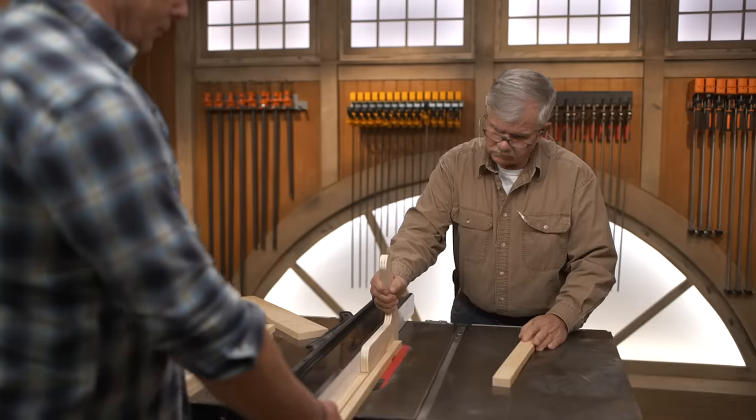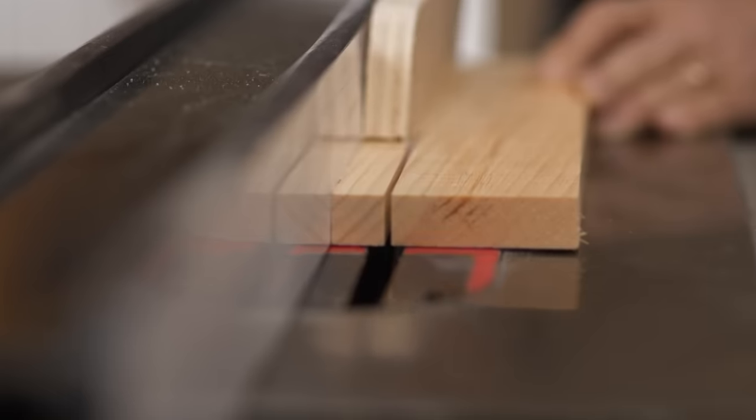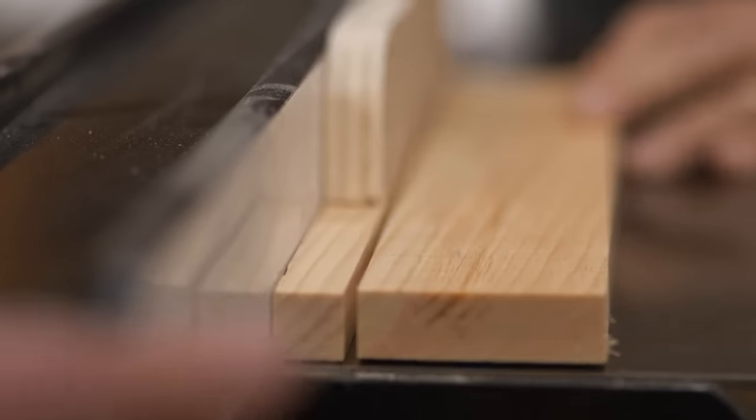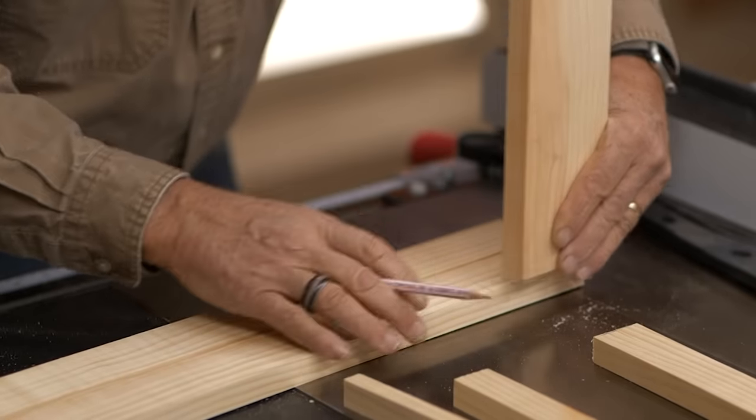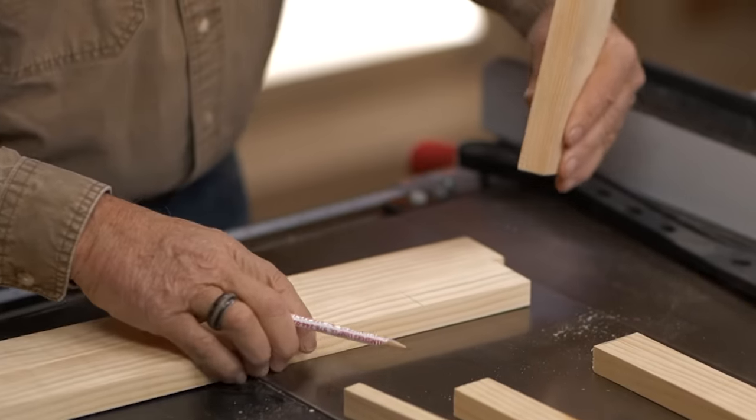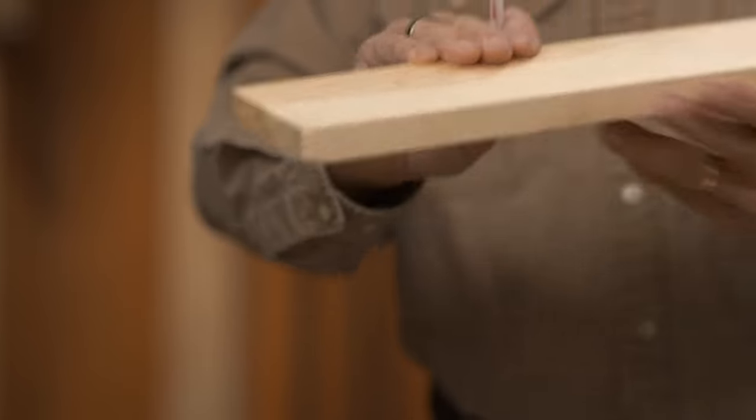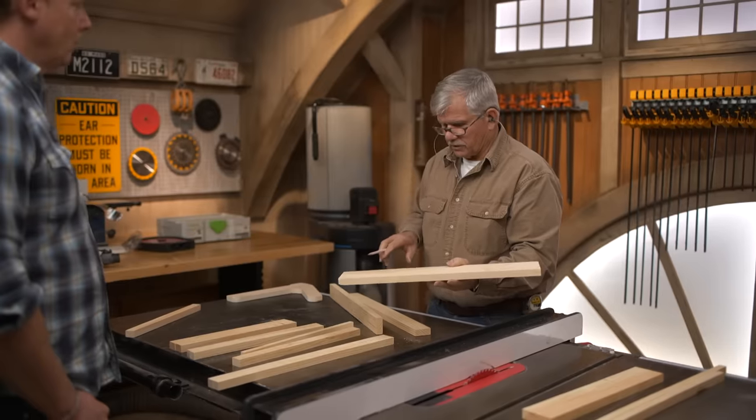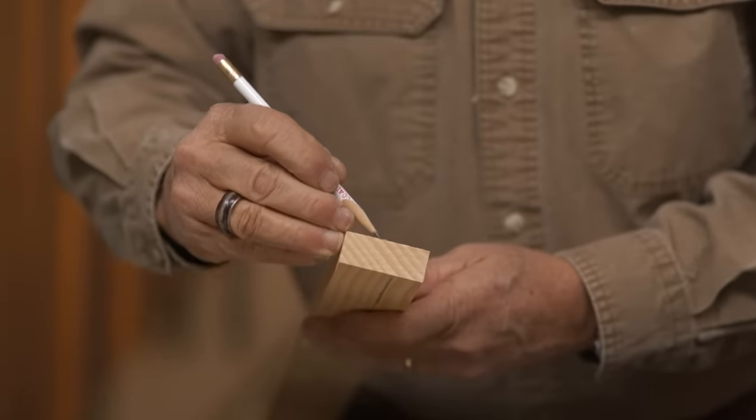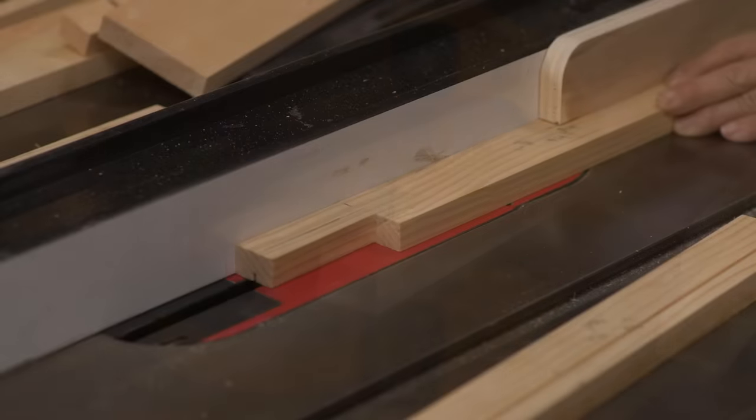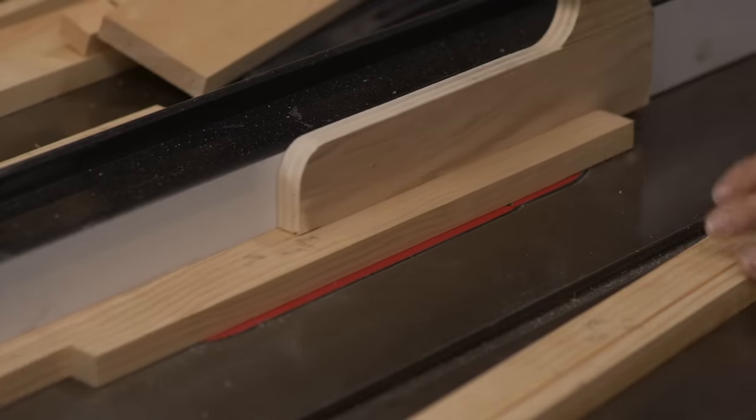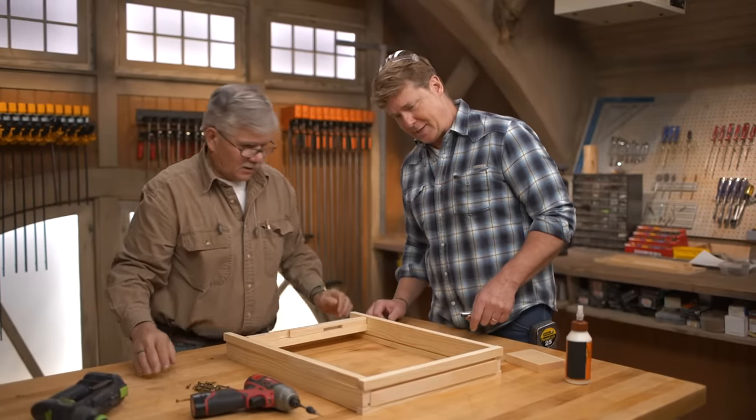I start by ripping the front, back, and sides to width based on the cut list I created. What I need to do now is make a rabbet cut or a lap cut right there for this to rest on, because this will be the landing base for the bees before they get into the nest. I've got two of those. There'll be a left and a right. Then I cut a dado on the left and right side to accept a thin piece of plastic.